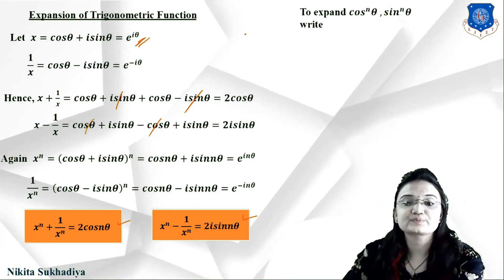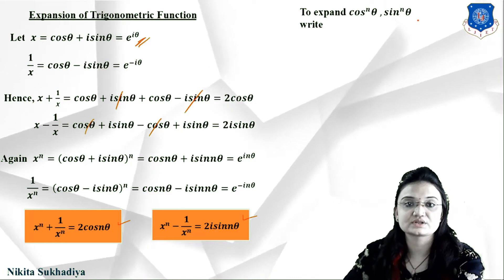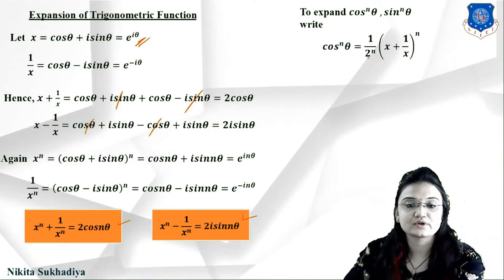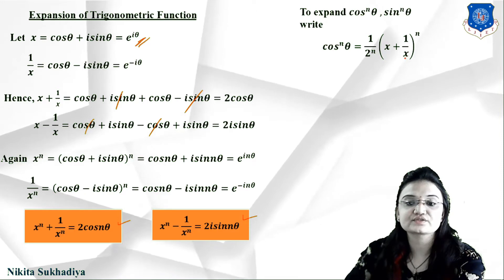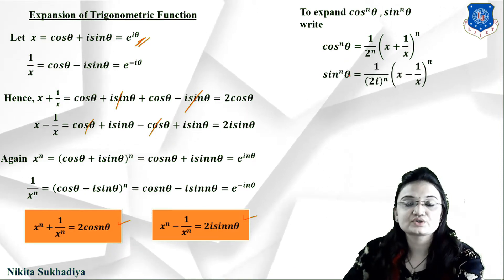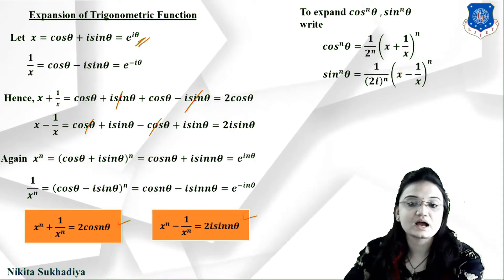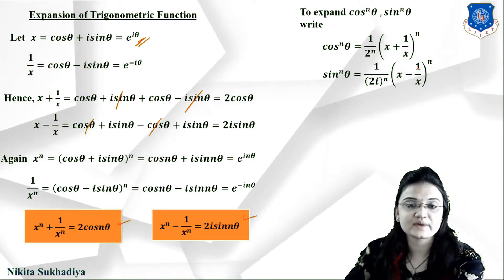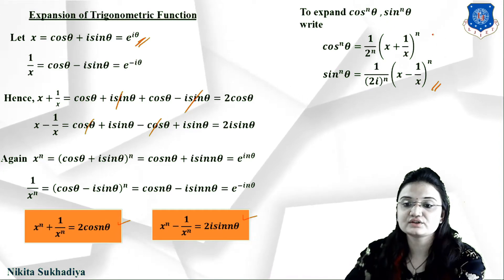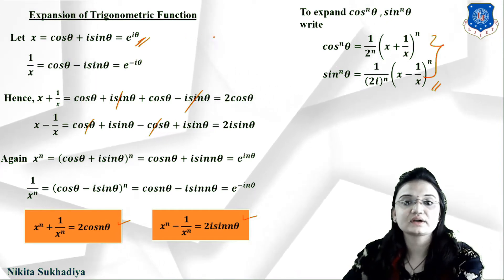Next, to expand cos^n(θ) and sin^n(θ): cos^n(θ) = (1/2^n)(x + 1/x)^n, and sin^n(θ) = (1/(2i)^n)(x − 1/x)^n. We will use these formulas in the next examples.